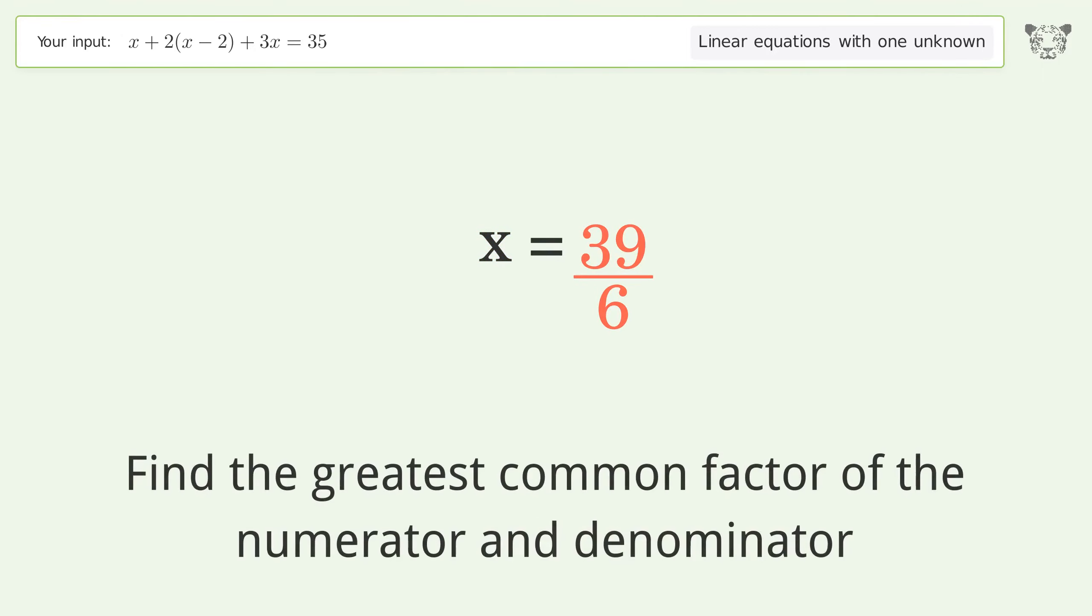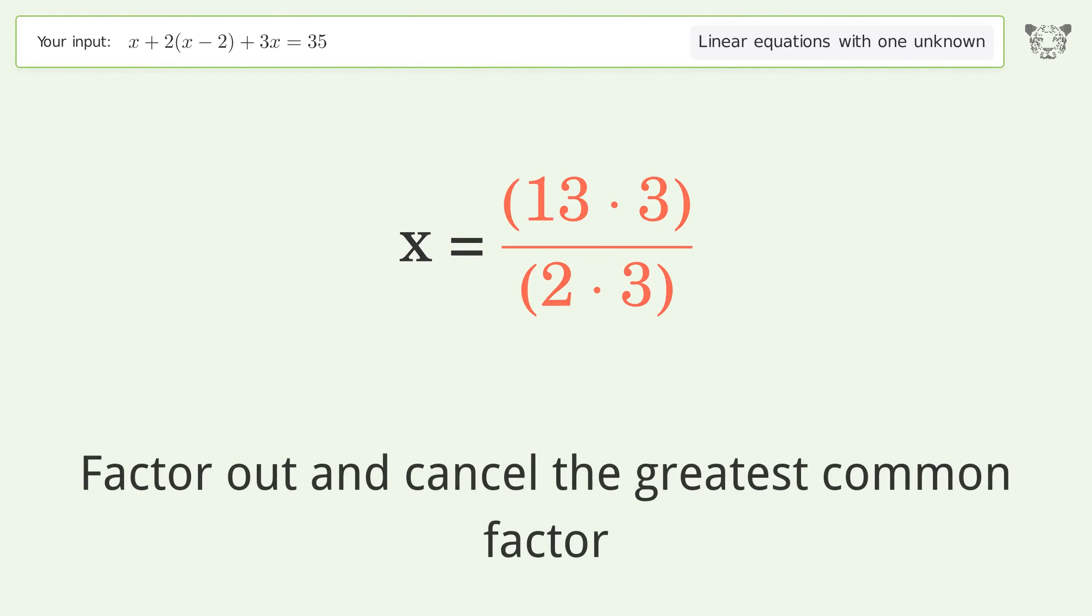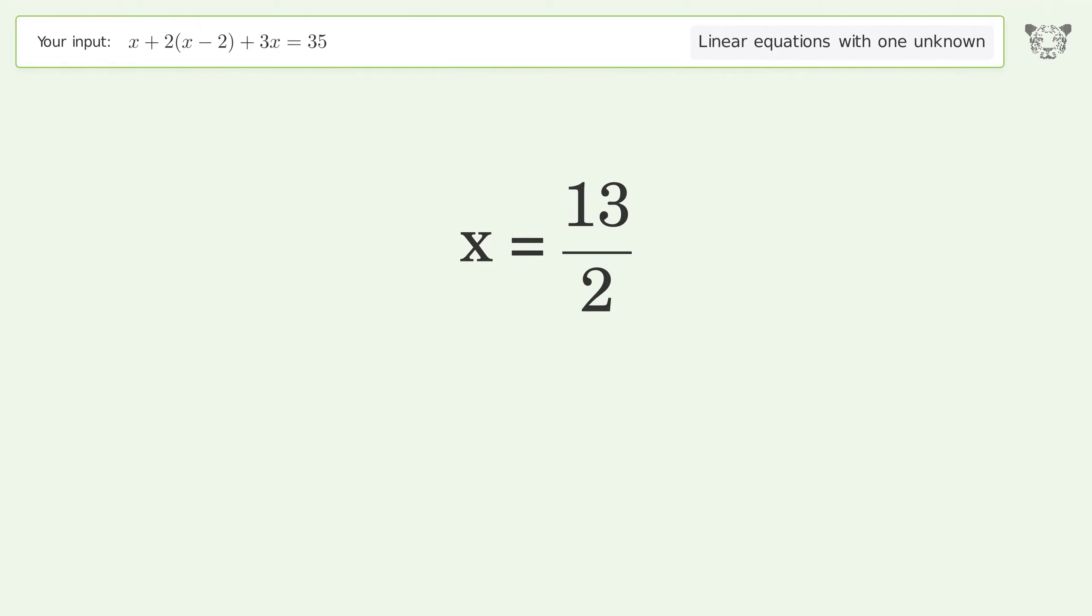Find the greatest common factor of the numerator and denominator. Factor out and cancel the greatest common factor. And so the final result is x equals 13 over 2.